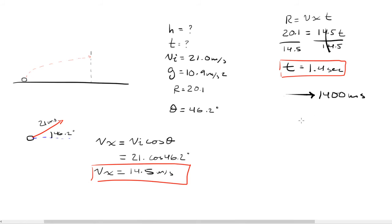Now that we have the time, we're going to find the height that the ball is going to be at when it hits the wall. We're going to use h = Vi_y*t + 1/2*a*t². To find the velocity in the y, it's going to be the initial velocity times the sine of theta, which is 21 times the sine of 46.2, and that is going to equal 15.2 meters per second.